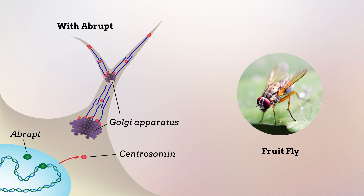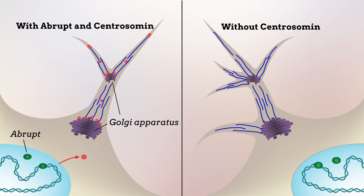At these sites, centrosomin bound to the Golgi apparatus, which acts as the foundation for the microtubule network. In the presence of centrosomin and abrupt, new microtubules grew away from the Golgi apparatus in the same direction, preventing them from pushing outward into new dendrites.